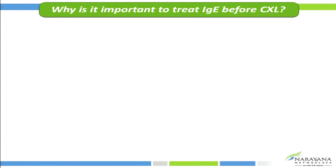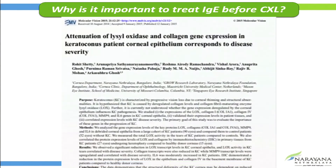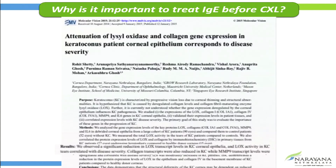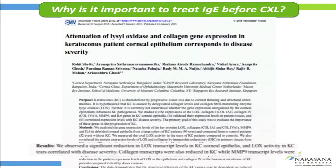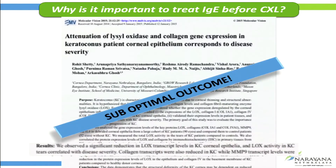Why is it important to wait and treat IgE first? IgE causes allergic inflammation, and we know through our paper that LOX — which is an endogenous cross-linker — is attenuated in cases of inflammation. LOX levels are lower with increasing severity of KC, so if we do not treat this inflammation beforehand, we will result in suboptimal outcomes.